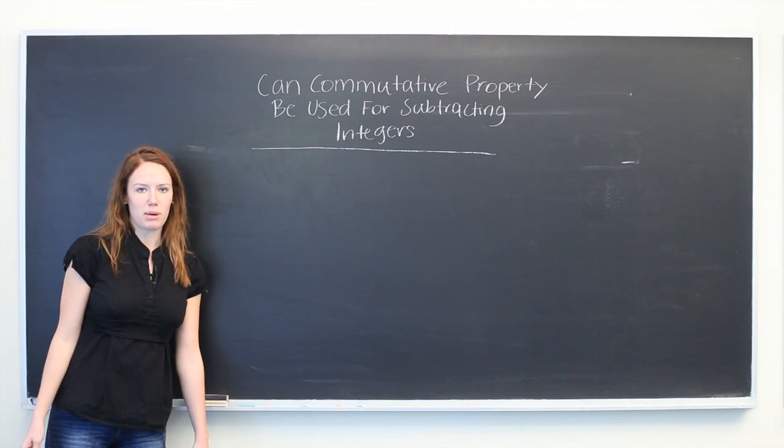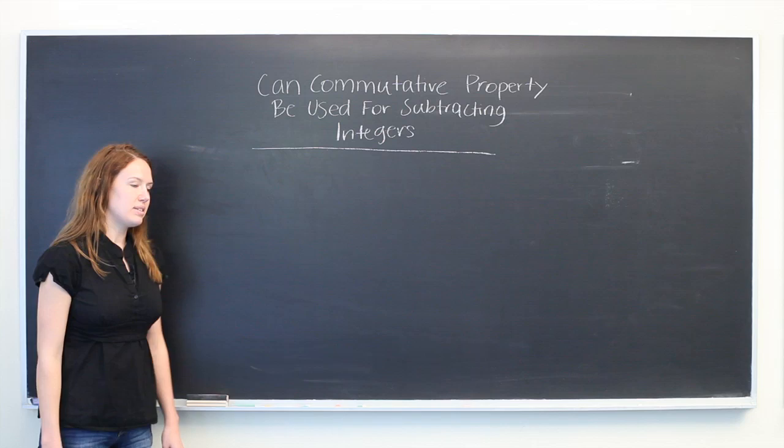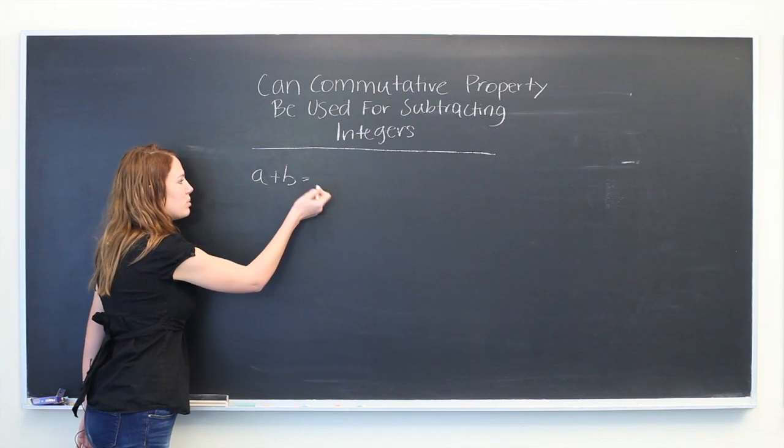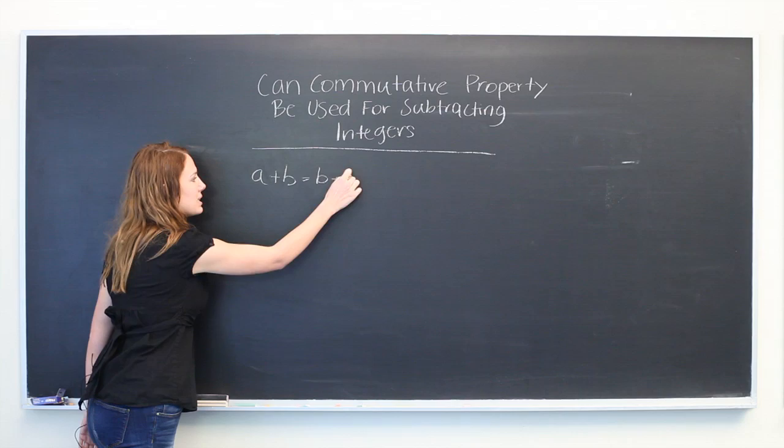So the commutative property in addition states that a plus b is equal to b plus a.